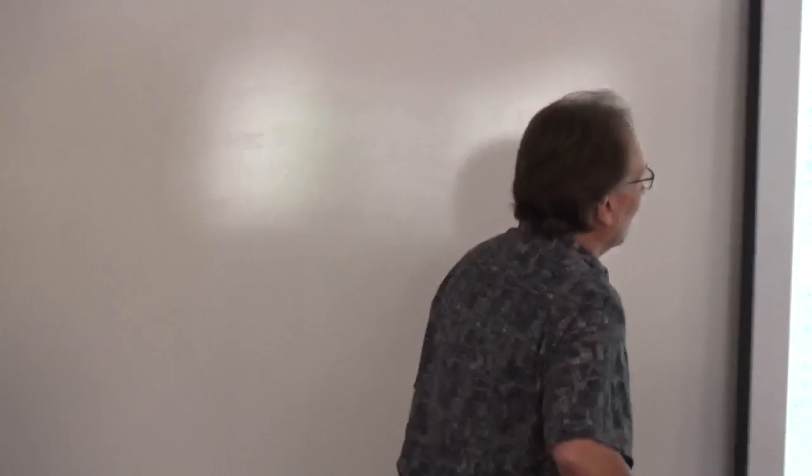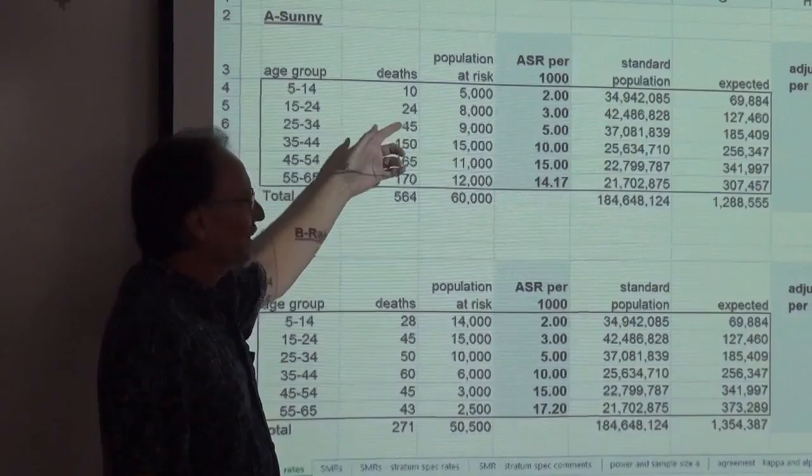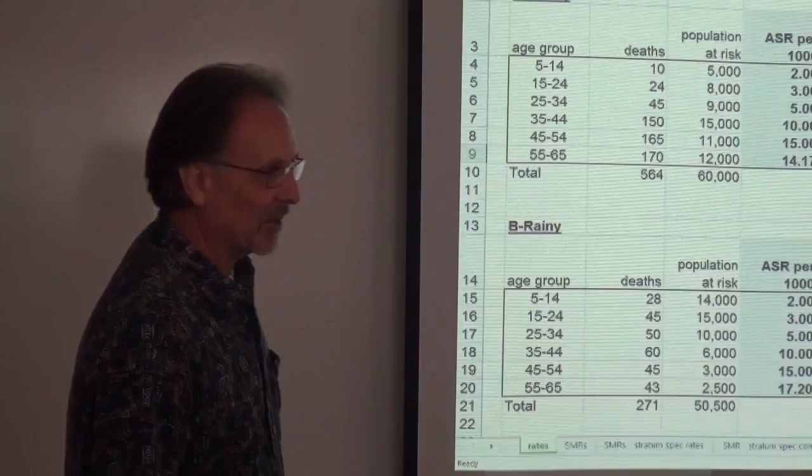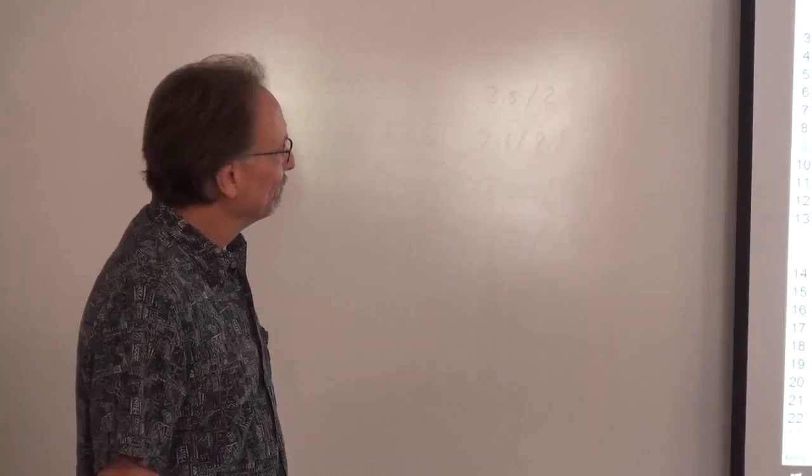What we're seeing is the different population structure — preponderance of young versus preponderance of old — and that's what's driving the crude death rates. This is exactly the phenomenon I was talking about in class last week. So that's the kind of discussion I would ask you to do for an example.